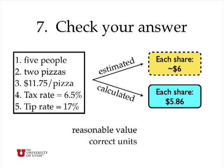So now in step 7, I want to check my answer. I originally estimated that each share would be $6, and in the final analysis I calculated that each share is $5.86. That means I have a reasonable value and the correct units in dollars, and so I estimate that I have calculated this problem correctly.